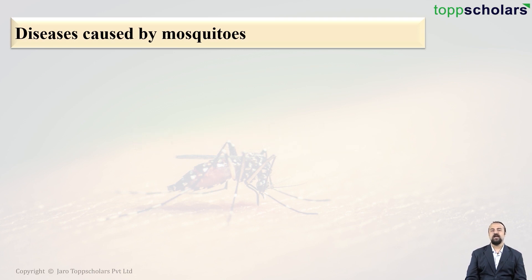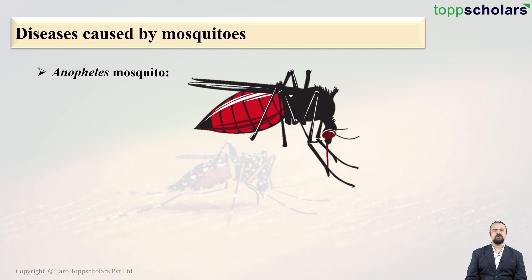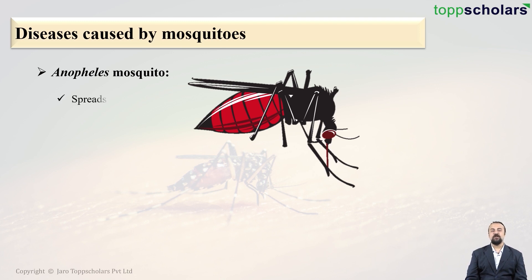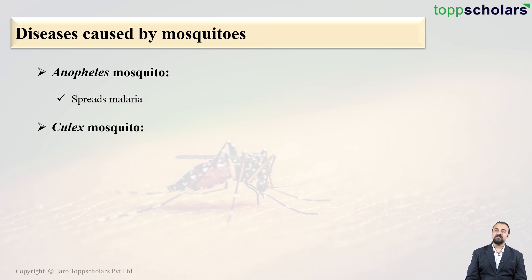The very first type of mosquito is the Anopheles mosquito. Only the females of this particular genus spread disease — the female Anopheles mosquito spreads malaria.